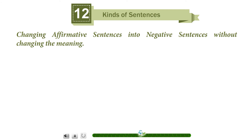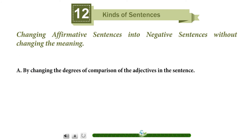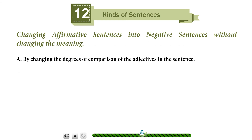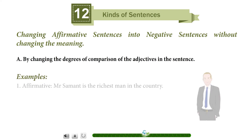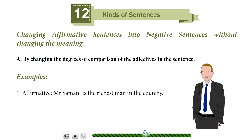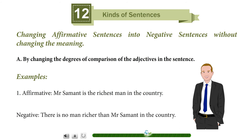Changing affirmative sentences into negative sentences without changing the meaning. Method A: by changing the degrees of comparison of the adjective in the sentence. Affirmative: Mr. Samanth is the richest man in the country. Negative: There is no man richer than Mr. Samanth in the country.